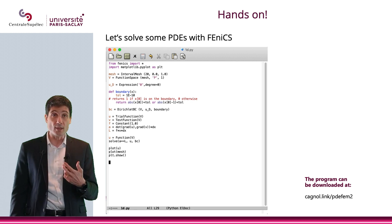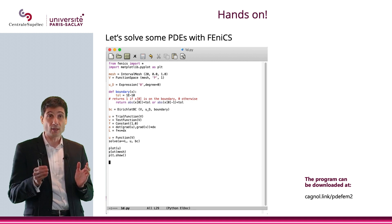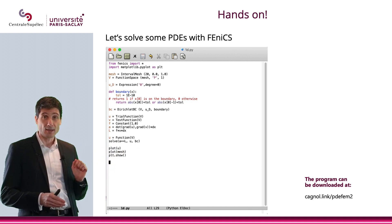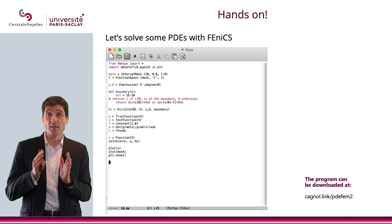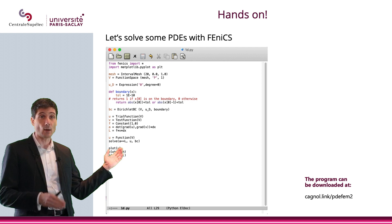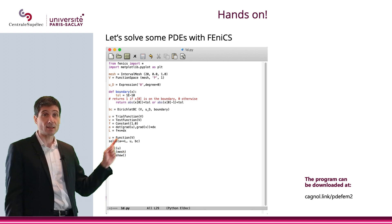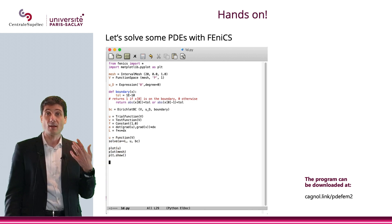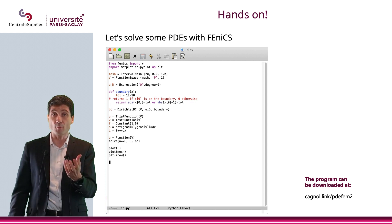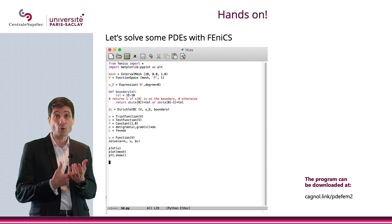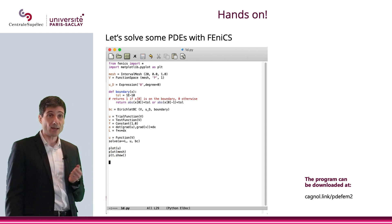Now, what I'm going to do is mesh the interval [0, 1]. Here is the number of nodes I want — that 20 I put here is the number of nodes I want in my mesh. So 'mesh' will be a variable that will contain the geometry and the mesh over this geometry.